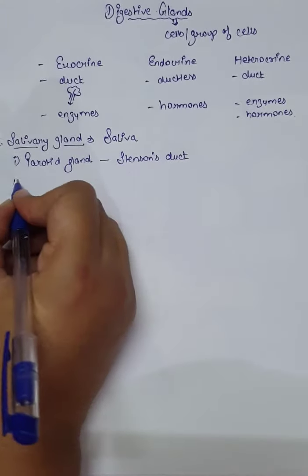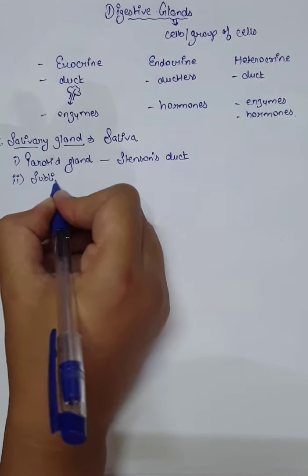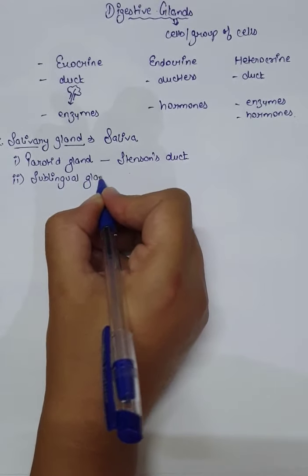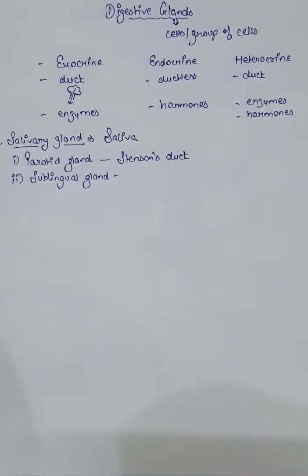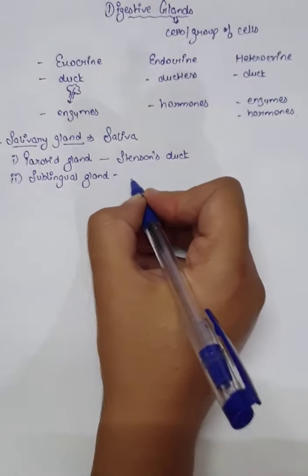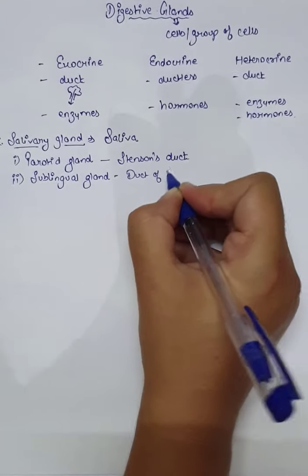The second one is the Sublingual gland. It is the smallest Salivary gland and is present below our tongue. Its opening is also at the floor of our oral cavity, at the base. The duct is known as the duct of Rivinus.